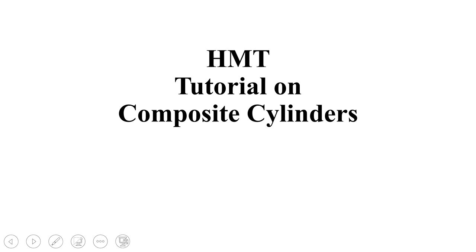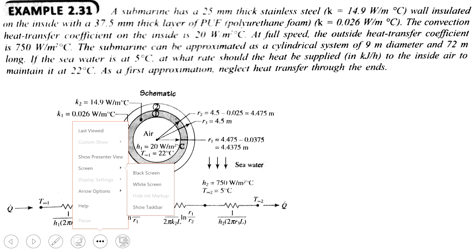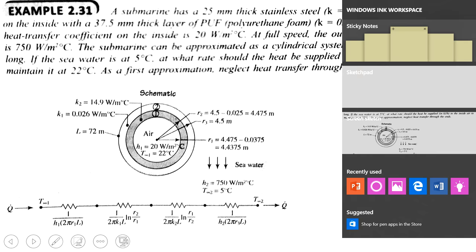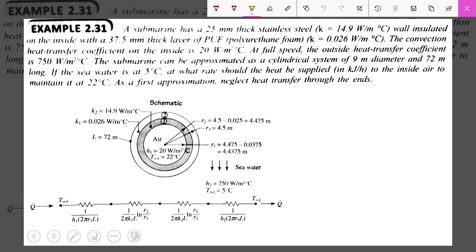So generally, this is normally called as the Composite Cylinder. In a composite cylinder, in the particular zone, which is in a case of Submarine type, the submarine has a 25mm thickness of stainless steel. And the Submarine is insulated on the inside — this insulation layer inside is made with 37.5mm thick polyurethane foam.